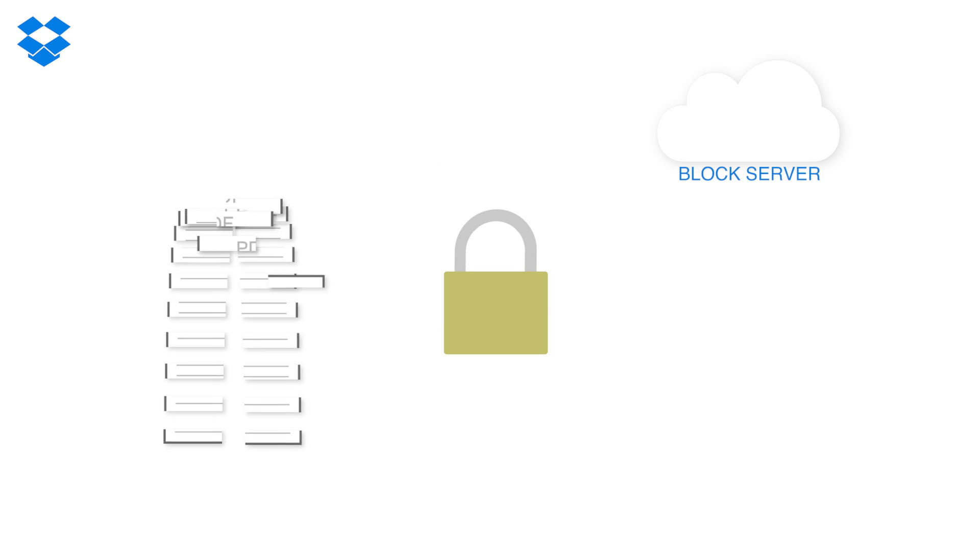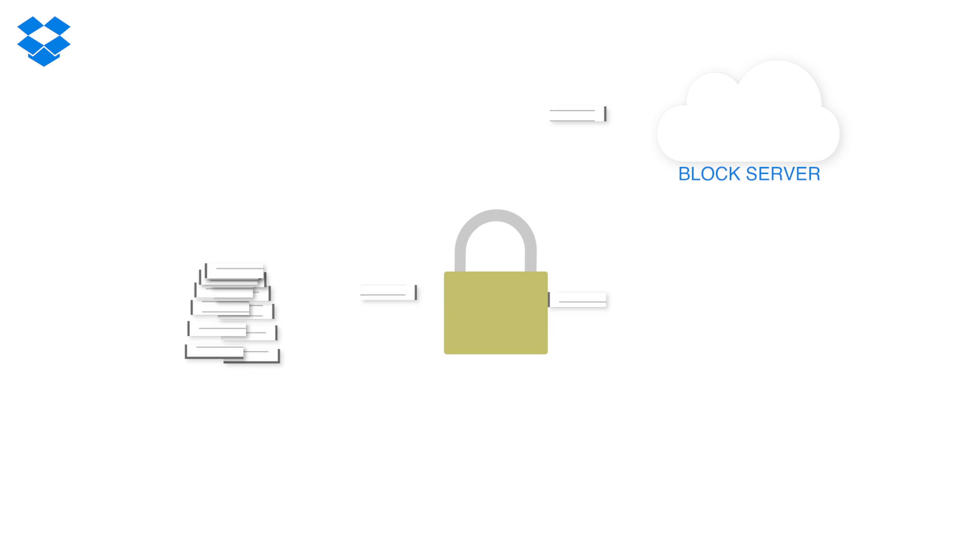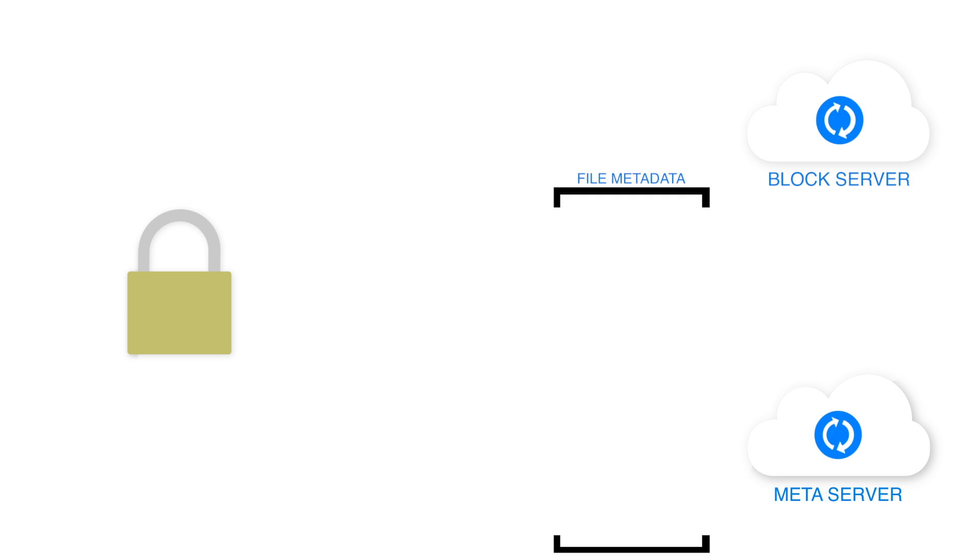The way Dropbox works is it runs as a client on many different operating systems and devices. The Dropbox desktop client is one of the most well-known and most interesting. Dropbox basically takes all of the files you put in the folder and chunks them into four megabyte chunks — for example, a hundred megabyte PDF file gets chunked into 25 four-megabyte chunks. Those chunks are then encrypted and sent to our block servers, which store each block with its data.